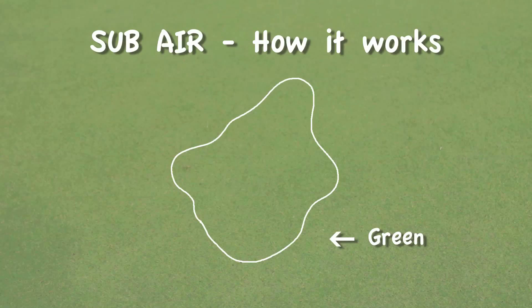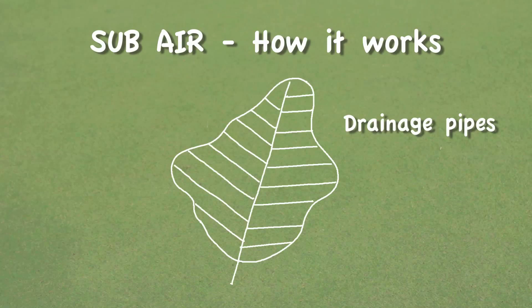The Subair system is really pretty simple. If this was the shape of a putting green, we would drain it very similar to the way we drain a bunker. There's a main line that runs up the center of the green. You have a series of lateral lines that run through the floor of the green.